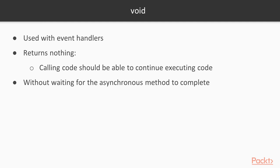What could be the use of a void return type in asynchronous methods? Generally, void is used with event handlers. Just bear in mind that void returns nothing, so you can't await it. Therefore, if you call a void return type asynchronous method, your calling code should be able to continue executing without having to wait for the asynchronous method to complete.